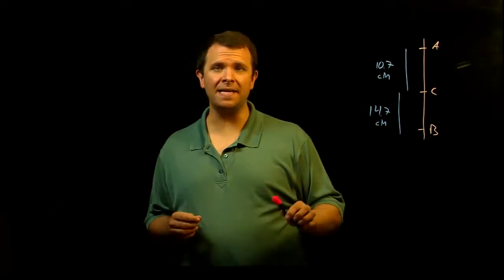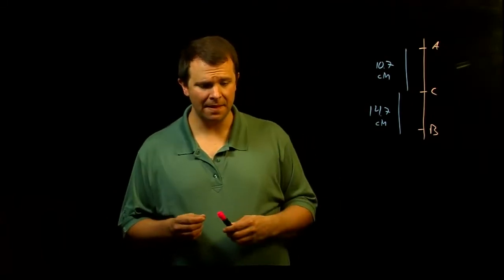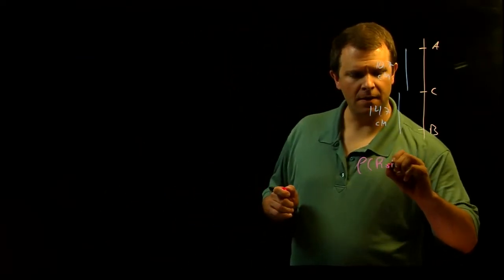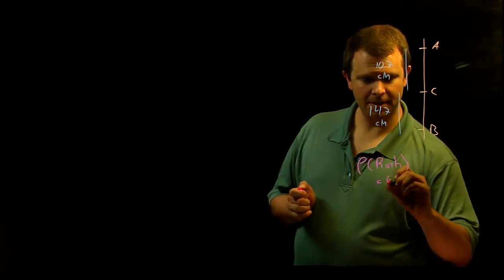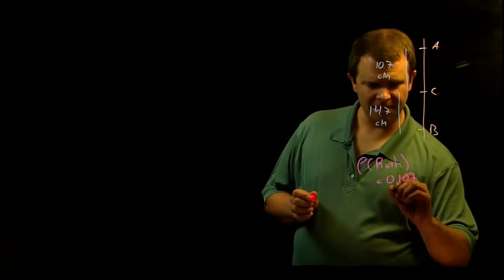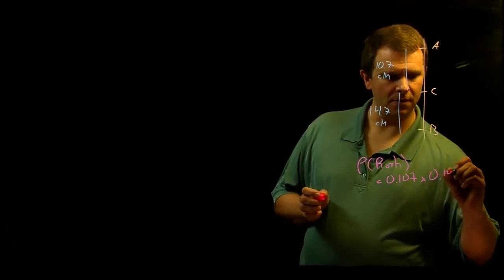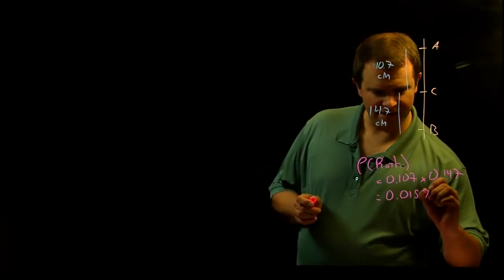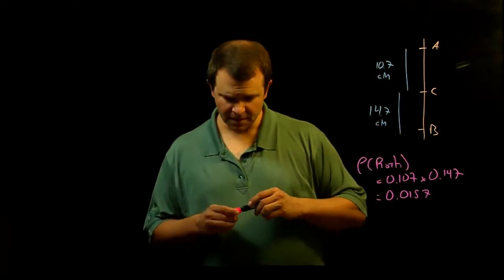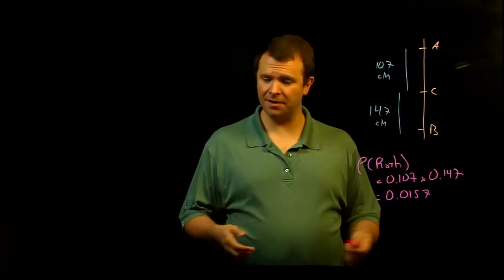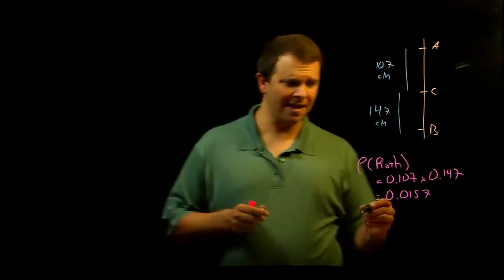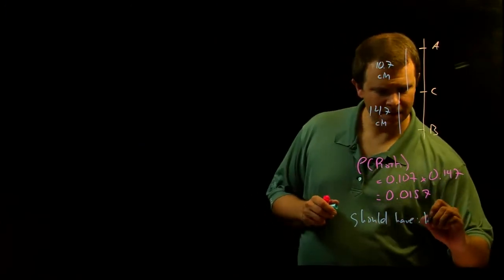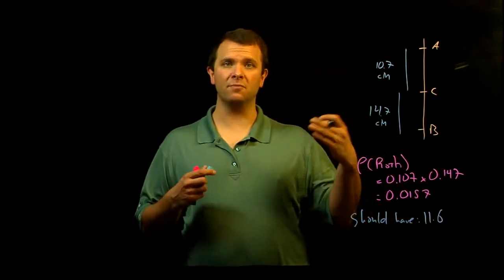If those two events are independent, then the probability that they both happen is just their product. So the probability of both is 0.107 times 0.147, which equals 0.0157. This means that out of 740 gametes, we should have seen 11.6 double recombinants.